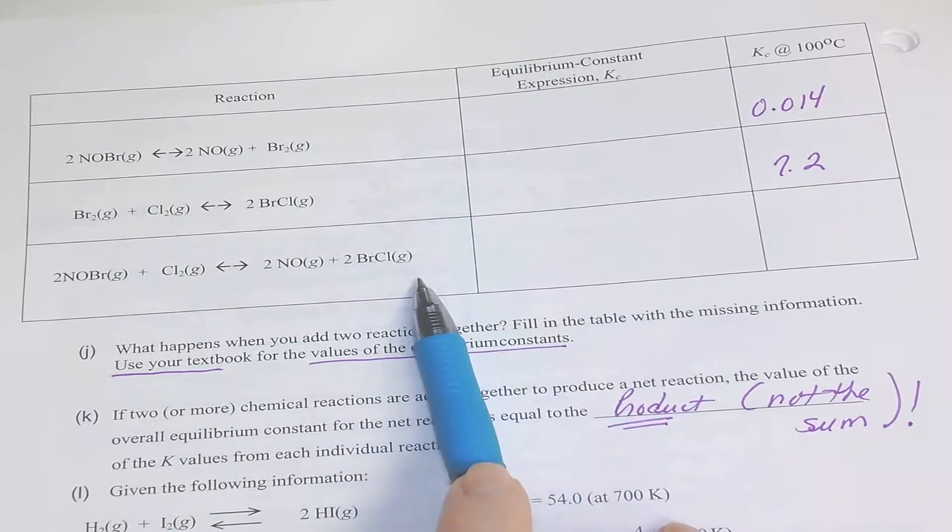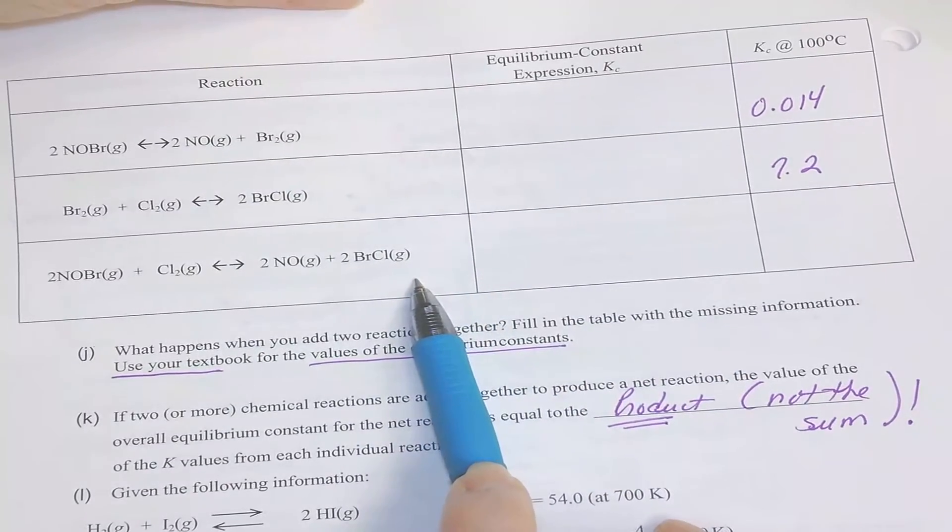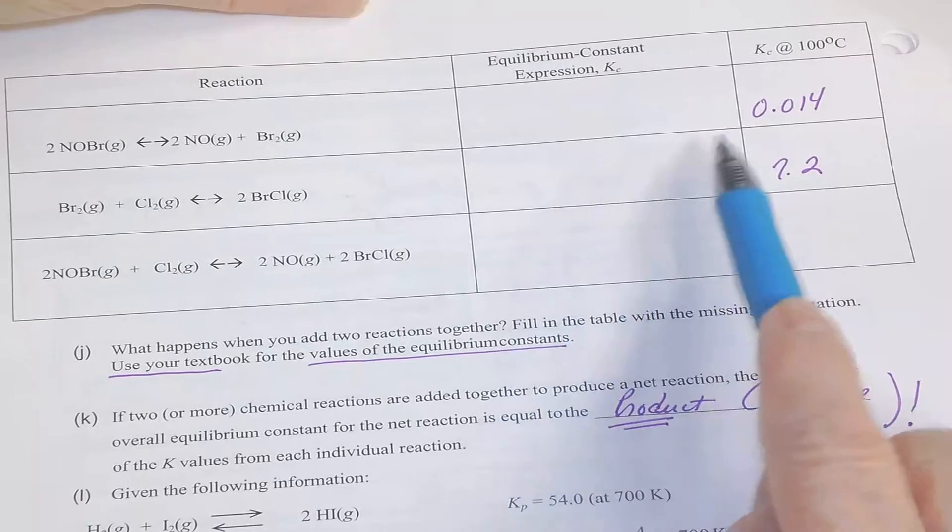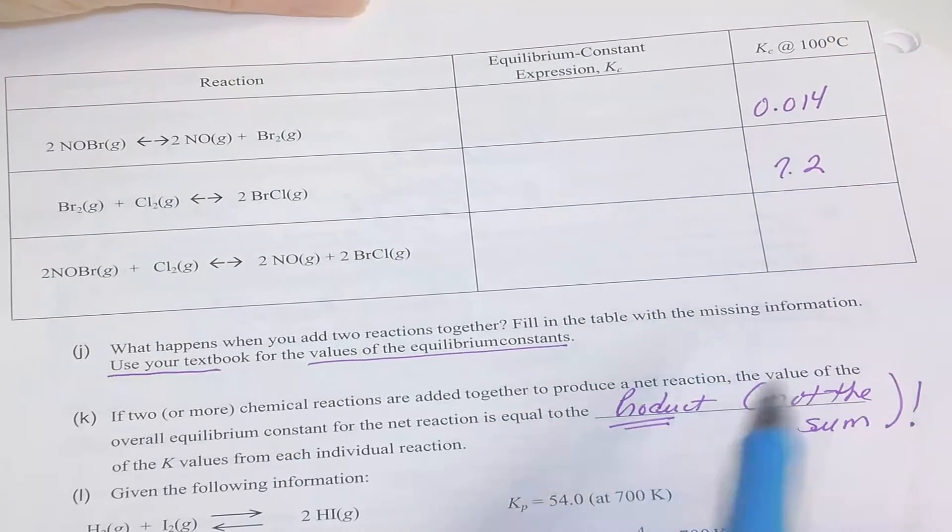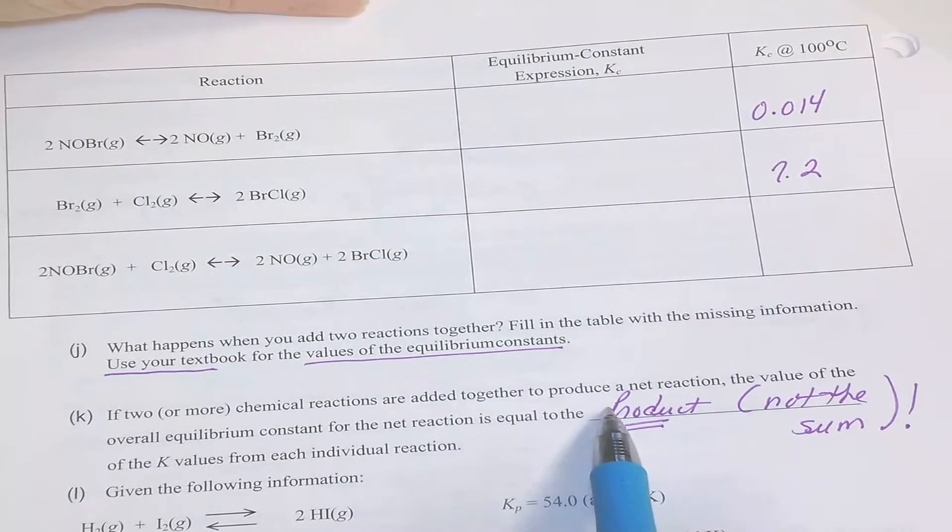So this is the idea of adding up reactions to get a new reaction. But instead of adding up the K's, you will multiply those K's together.